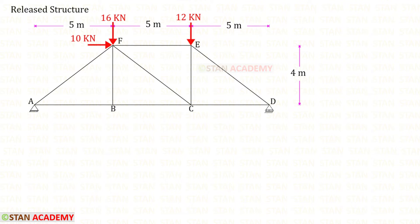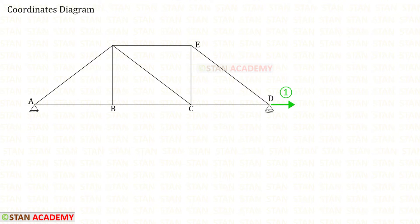I have released the horizontal reaction HD. Previously at D, we had a hinged support. Now there is a roller support. In the roller support, there will be only one reaction — here, only a vertical reaction. This structure is called the released structure. Let us draw the coordinates diagram. In this analysis, there is only one coordinate because we have removed only HD. Let us assume that HD is acting towards the right side. If we get a negative value, then we can change the direction.